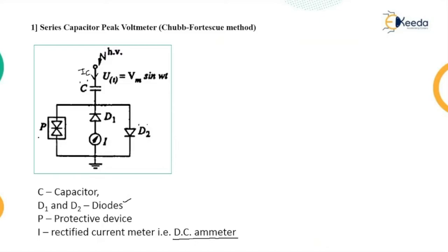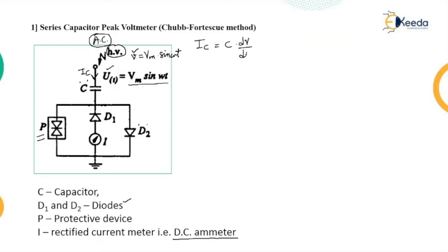There is a need to protect the metering device, and hence a protective device is placed here. When a capacitor is connected to a sinusoidal voltage source, the value is V = Vm sin(ωt). It indicates a sinusoidal voltage where V is the instantaneous value. The charging current IC passes through this circuit and IC can be written as C dV/dt, where V is the RMS value of the voltage.